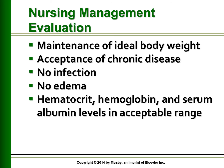HLA typing and cross-matching are done to check for histocompatibility. The kidney transplant in the recipient is usually placed in the iliac fossa. The success of the kidney transplant depends on changing the patient's immunological response so that the new kidney is not rejected as a foreign organ. The three main complications to watch for soon after kidney transplant are infection and rejection, with rejection being the most serious complication and having three types: hyperacute, acute, and chronic.